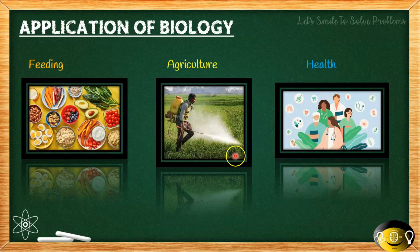In the field of agriculture, scientists have used a technique known as genetic modification to create special crops. These crops have certain qualities that help them fight off pests or survive dry conditions without needing as much water. By growing these modified crops, farmers can produce more food and use fewer chemicals to protect their crops.